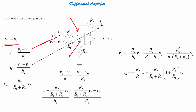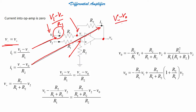First we are considering the current I1 on the inverting side. This value is nothing but (V1 minus V minus) divided by R1. And if I consider the other side, it will be (V minus minus Vo) divided by R2.